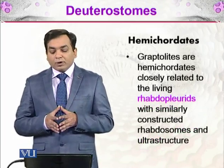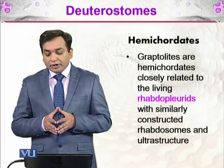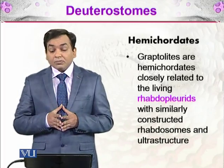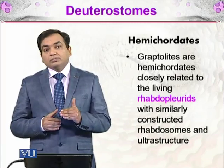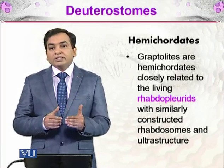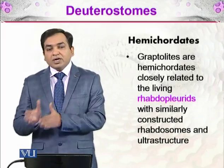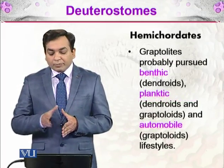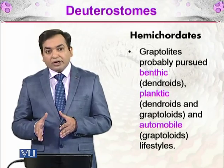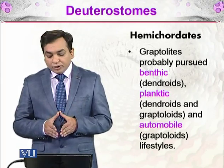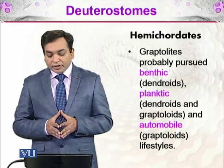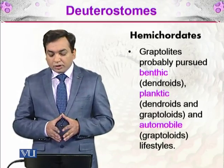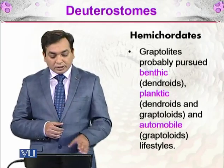The second group of deuterostomes are the hemichordates. Graptolites are hemichordates closely related to the living rhabdopleura, with similarly constructed rhabdosomes and ultrastructure. Hemichordates are more advanced than the echinoderms but less advanced than the chordates. The graptolites probably pursued benthic lifestyles as dendroids, planktic lifestyles floating in the ocean, and some were motile graptolites moving on their own.